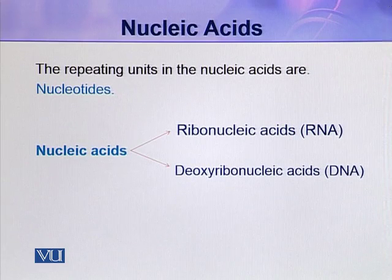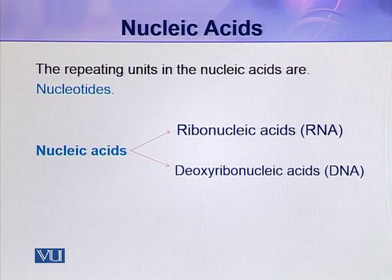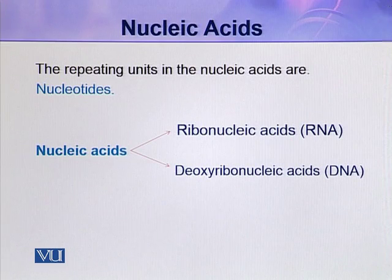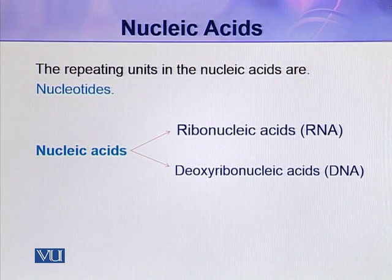Deoxyribonucleic acid, DNA, is only of one type. There are no other types of DNA, and it is mainly present in the nucleus, in addition to chloroplasts and mitochondria. The sequence of amino acids in a protein molecule depends on the nucleotide sequence in the DNA molecule, so the DNA molecule describes the amino acid sequence of a protein.